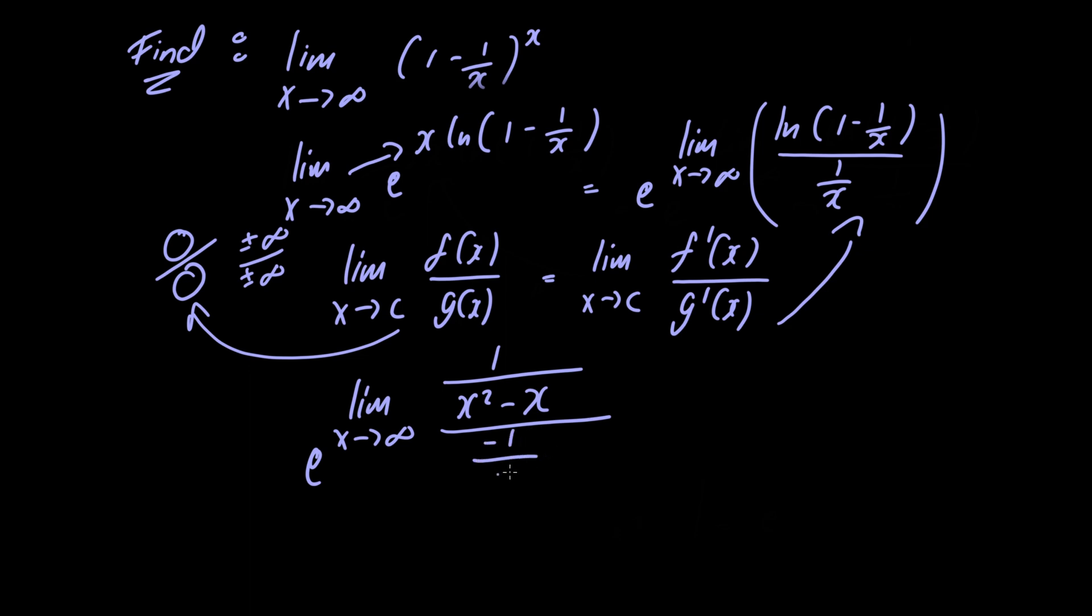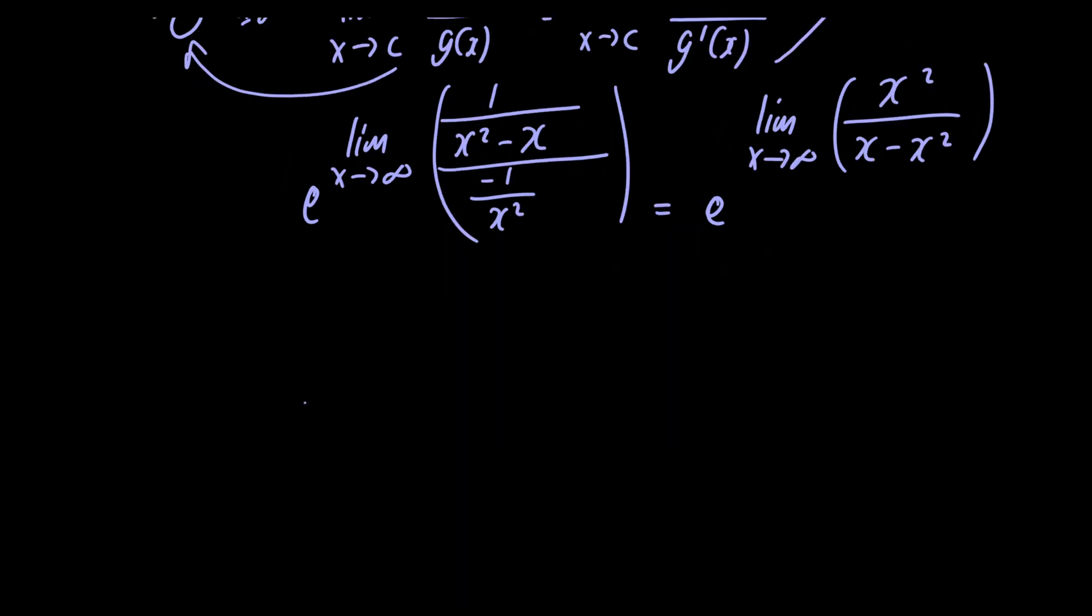Simplifying this limit gives us e raised to the limit as x approaches infinity of x²/(x - x²). Now, in order to solve this limit, what we're going to do is divide everything by x².